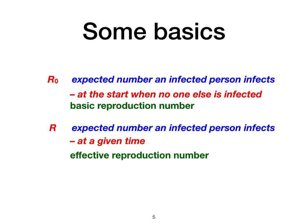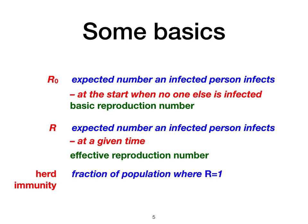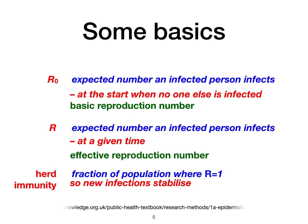Possibly you've also heard of herd immunity — that is when the fraction of the population causes R to equal one. As the disease is spreading and R is reducing, it eventually hits one, so new infections stabilize and eventually start to reduce. You'll find definitions like this at various websites, and these are things found in many other places, but there are nice summaries available.